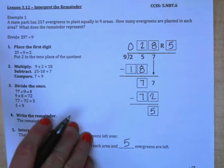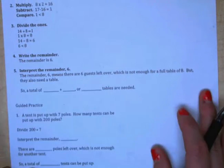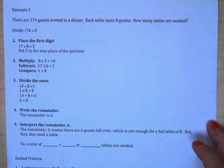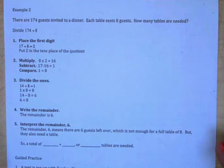Let's move on to example 2. It's going to give us a little bit of a different type of problem and help us see when it is necessary to take the remainder off. It says there are 174 guests invited to a dinner. Each table seats 8 guests. How many tables are needed? So we are going to divide 174 by 8.